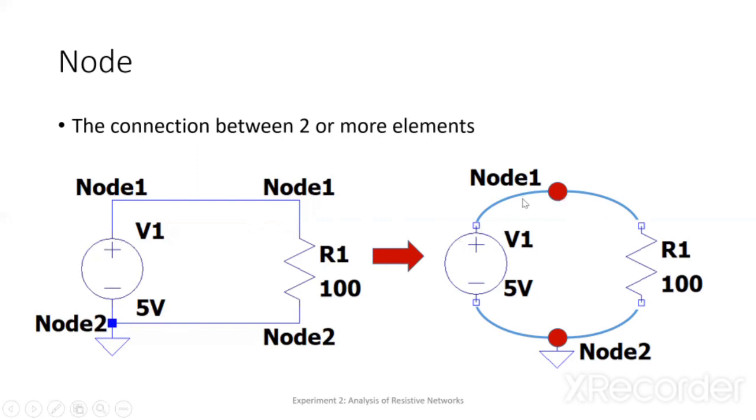First leg of V1 is connected to the first leg of R1. Second leg of V1 is connected to the second leg of R1. So, there are only two junctions. So, there are only two nodes.